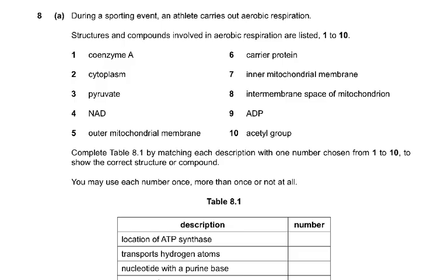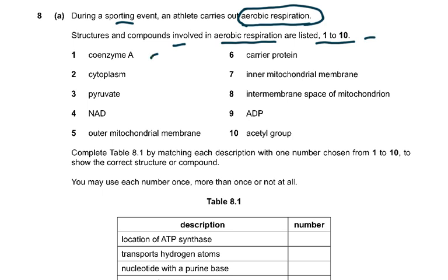We start looking at question number 8: during a sporting event, an athlete carries out aerobic respiration. Structures and compounds involved in aerobic respiration are listed 1 to 10: coenzyme A, cytoplasm, pyruvate, NAD, carrier protein in a mitochondrial membrane, intermembrane space, ADP, acetyl group.